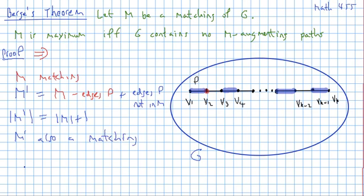Therefore, we have a contradiction, because this contradicts the maximality of m. So we conclude that if m is maximal, there cannot be augmenting paths.